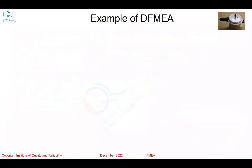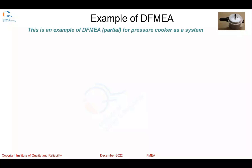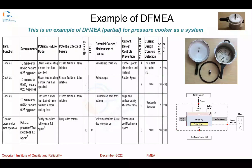Now let us look at an example of Design FMEA. This is an example of DFMEA partial for a pressure cooker as a system. Everybody knows what a pressure cooker is and what parts are involved. The primary function of a pressure cooker is to cook fast, and an important function is to make it safe — to release pressure for safe operation in case the pressure exceeds a certain value.